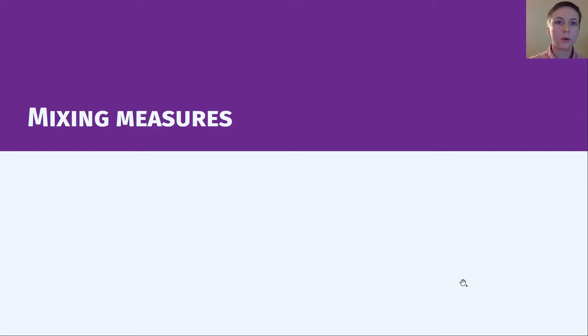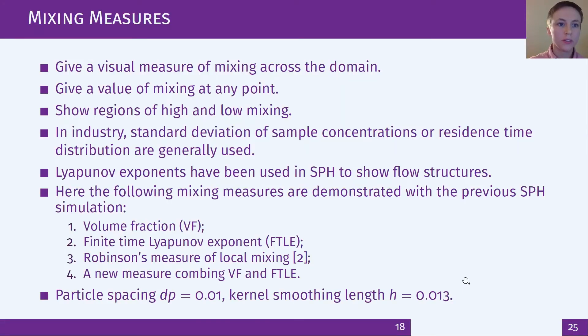Now to look at mixing measures and why they might be useful. So these give a visual measure of mixing in the whole domain as well as giving a value of mixing at any point in the domain and it's relatively straightforward to produce a global value from this for comparison between methods. Here we're looking at the volume fraction, the finite time Lyapunov exponent, a local measure introduced by Robinson, and a new measure I've developed that combines the volume fraction and finite time Lyapunov exponent. Here they're all considered for two phases.